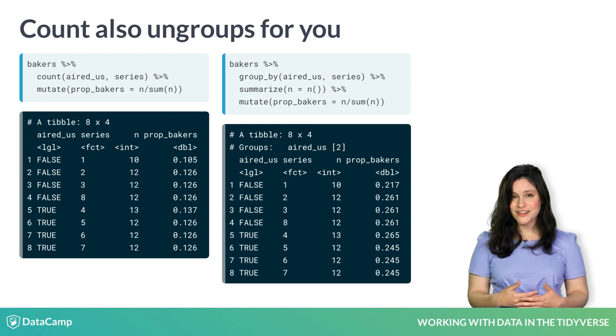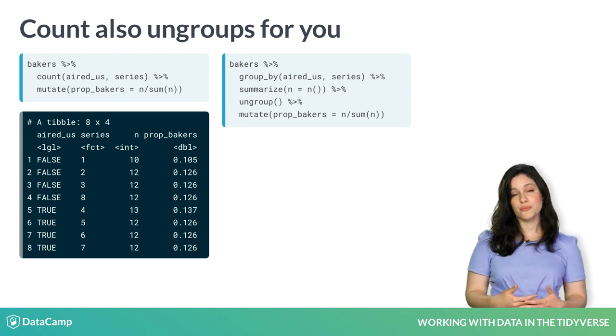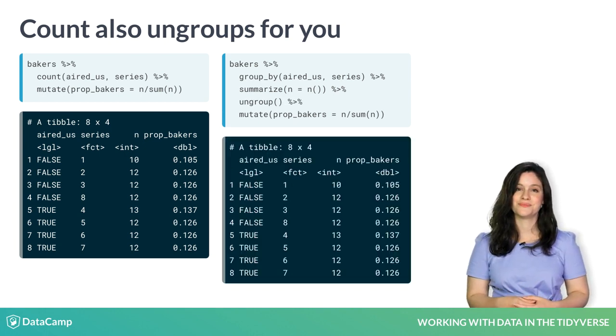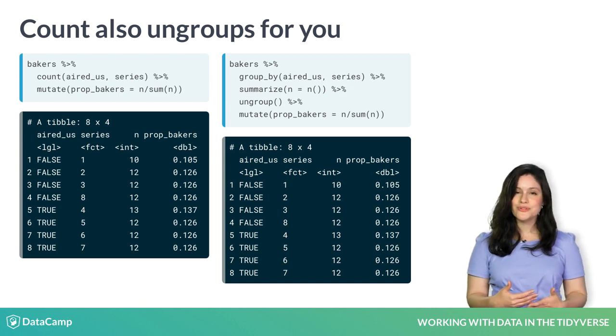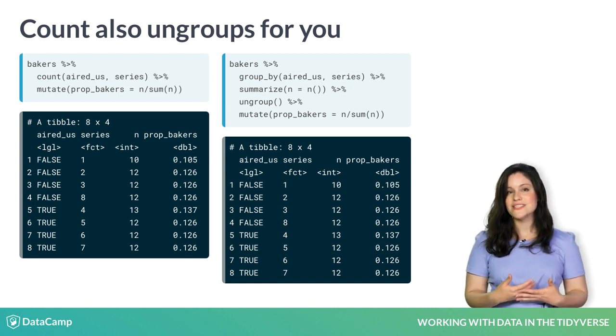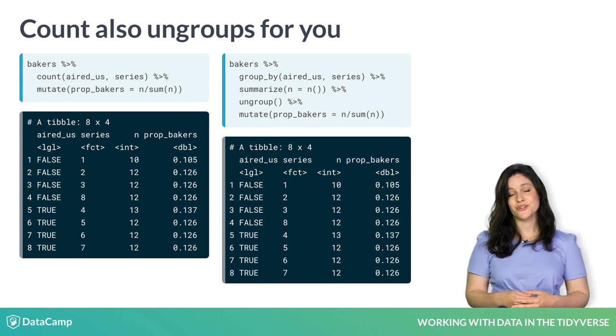To get the answer we are after here, we would need to add an ungroup before the mutate. This ensures that the denominator is as expected. Comparing the code on the left and the right, they both do the same thing, but the left is more straightforward and easier to read.